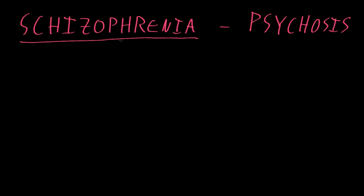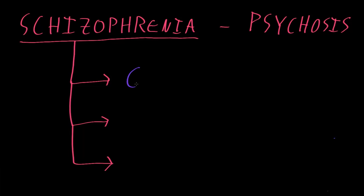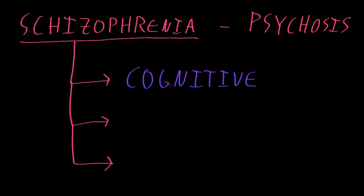The abnormalities of schizophrenia are often divided into three big categories. The first of these are called cognitive symptoms, and there can be all sorts of cognitive symptoms with schizophrenia, such as abnormalities of attention, organization, or things like planning abilities.